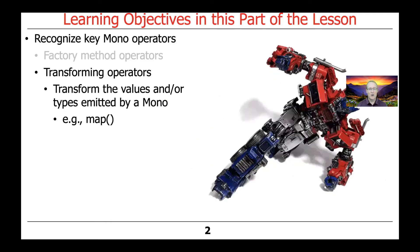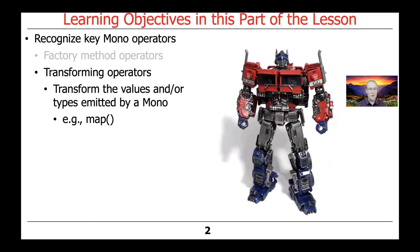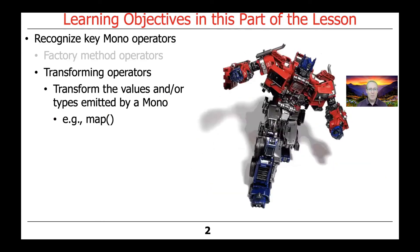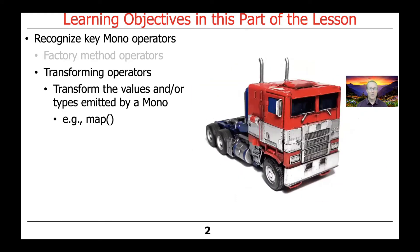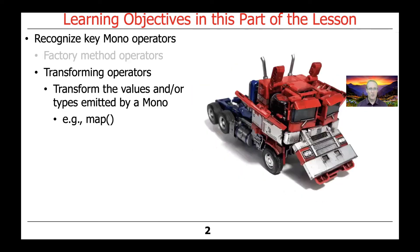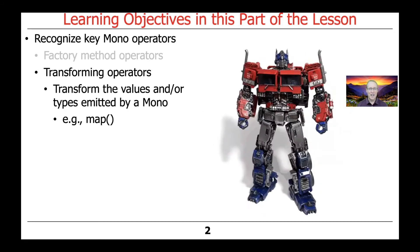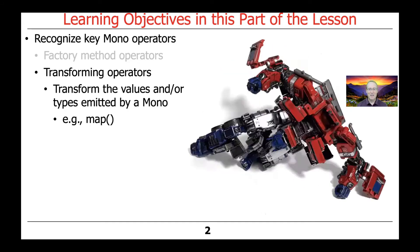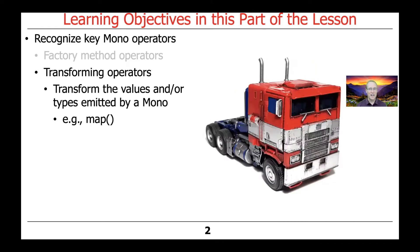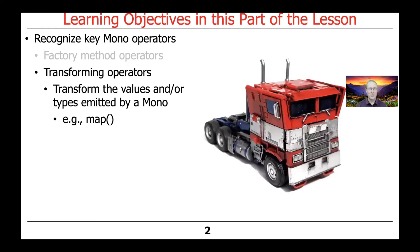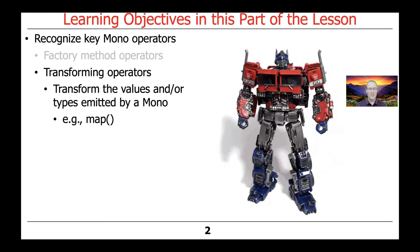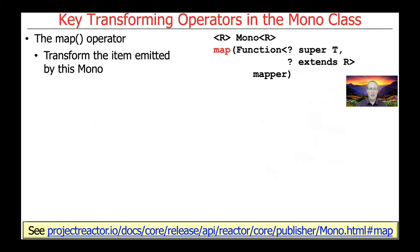The transformation methods work by transforming values and/or types that are emitted by a Mono. We're going to start by talking about one of the most important transformation methods, which is the MAP method. It's represented by the image of a transformer changing from one shape or type into another — a metaphor for what a transformation operator does. MAP is used to transform the item emitted by the Mono.